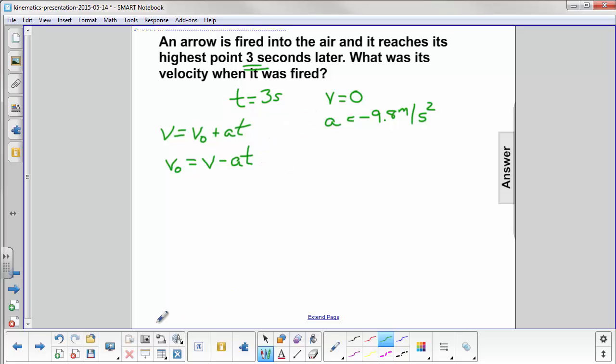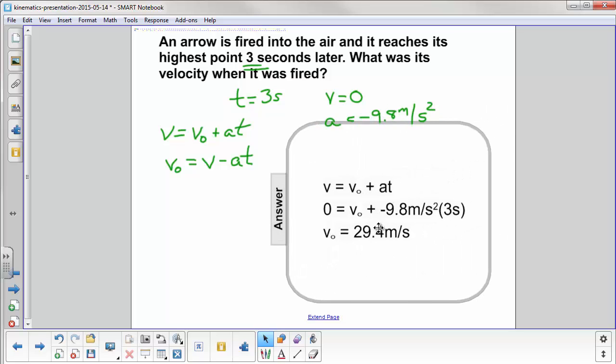So now it looks like we have enough numbers to go ahead and put them into the equation. And here we have it. Velocity is equal to negative 9.8 meters per second squared times three seconds, right here.